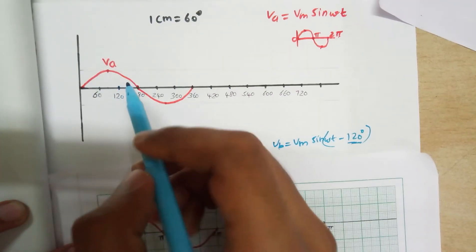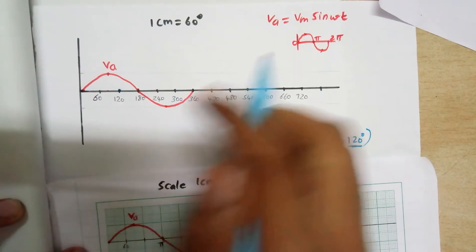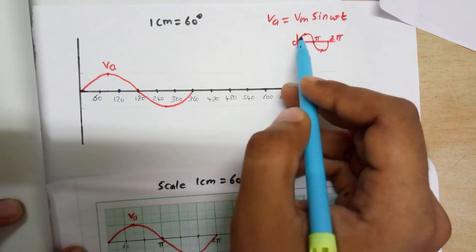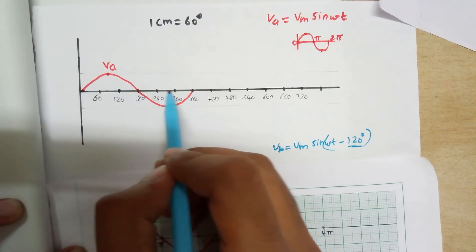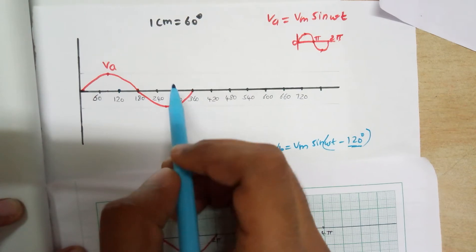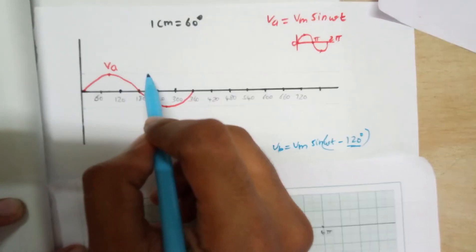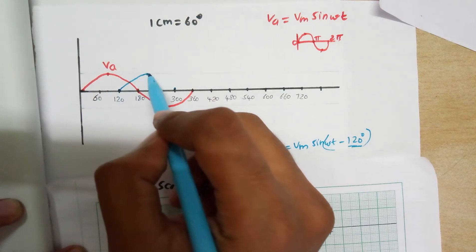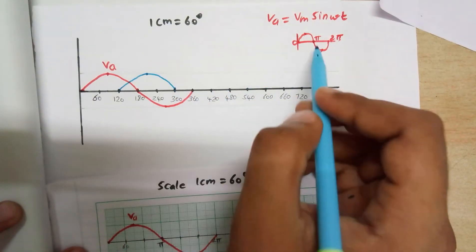Start from 120 degrees. The wave top part will conduct for 180 degrees — from 0 to pi. So from 120 degrees, the top part conducts for 180 degrees and ends at 300 degrees. The starting point, ending point, and middle peak point will be after 1.5 cm. Connect the starting point, middle peak point, and ending point.